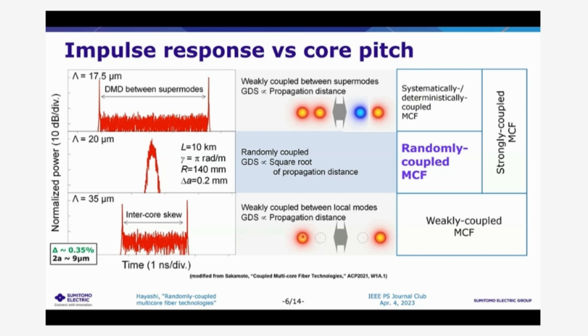And if the cores are distant, the core to core coupling becomes very weak. And also in this regime, the coupling is not sufficient to suppress mode dependent impairment. So in between these two regimes, there is a randomly coupled regime that can maximize the random coupling between the cores or between the supermodes. And in such a regime, the optical characteristics or transmission characteristics of the coupled multicore fiber become very preferable for the long haul transmission.